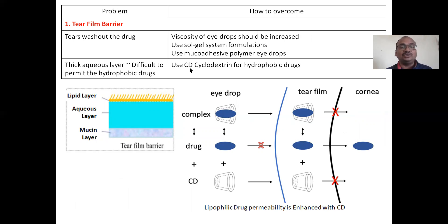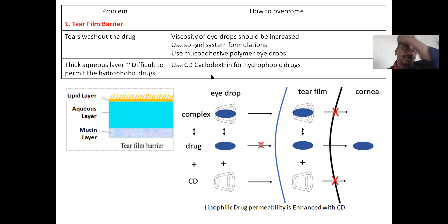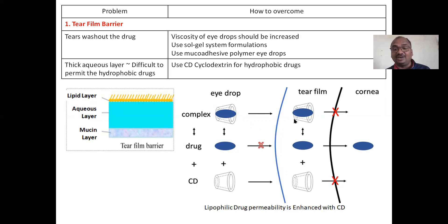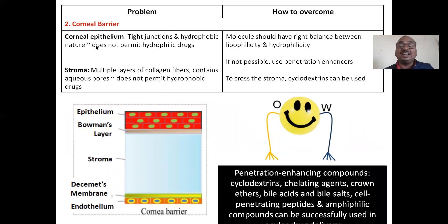In the tear film you can also use cyclodextrin (CD) for hydrophobic drugs. If your drug is hydrophobic, the aqueous layer will not permit it. What you do is prepare a cyclodextrin complex — cyclodextrin has a bucket-like structure. The drug is inserted into the cyclodextrin and the complex easily crosses the tear film. The drug is then released within the tear film and enters the cornea.